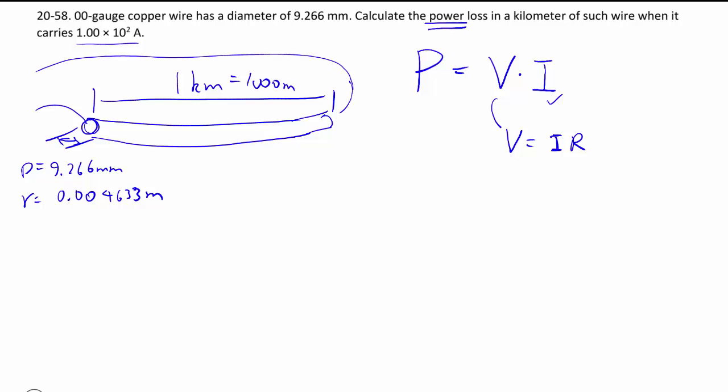And if we apply a certain voltage across it, then we know how much current flows through it. So we can use that to figure out my voltage. But we need this resistance.